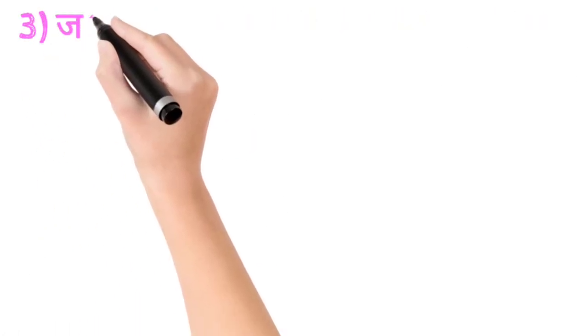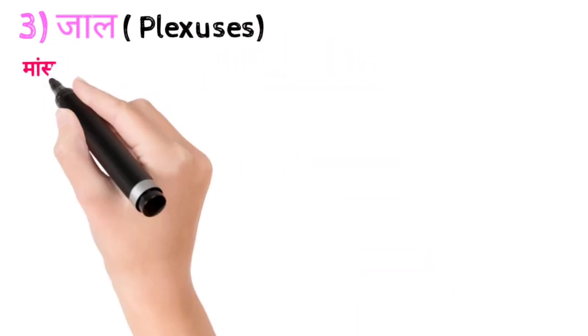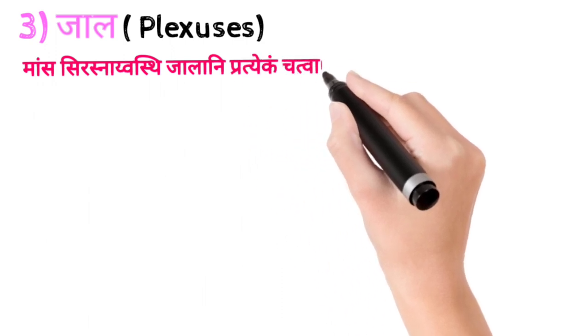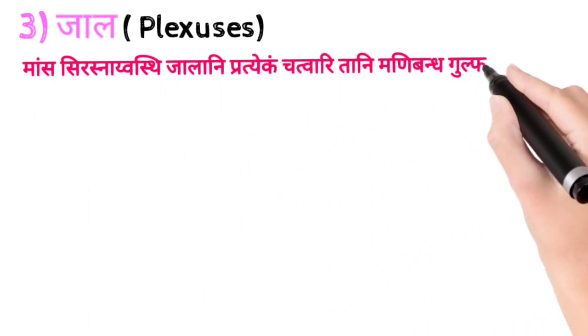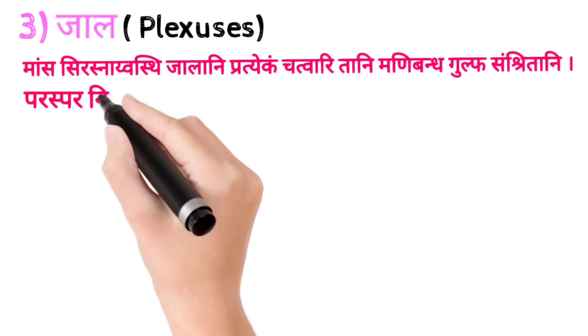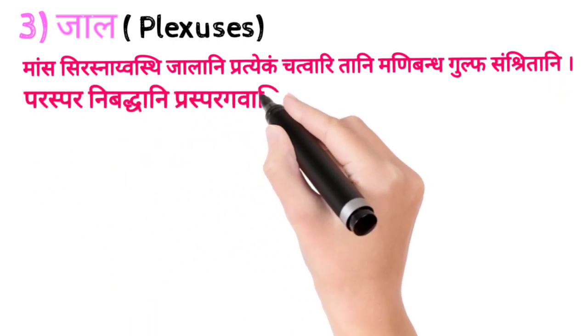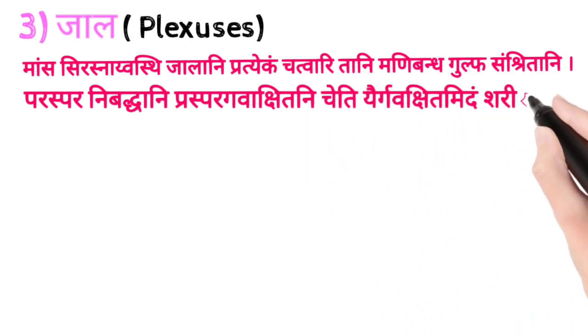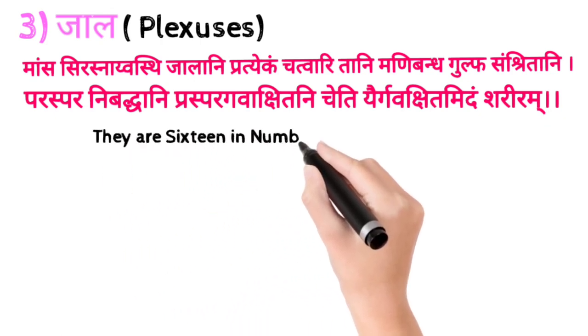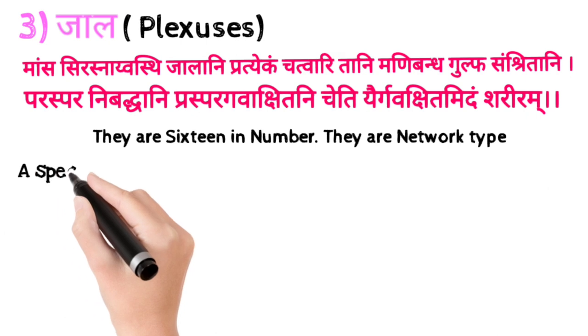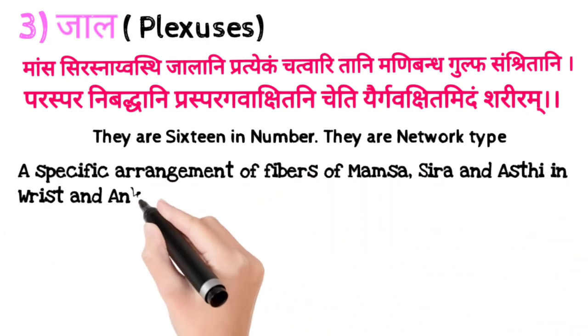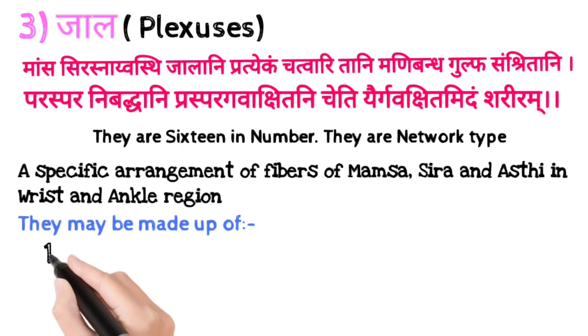The next step is the top part of the neck region. Plexuses hote hain. Mass Sira Snayu Asthi Jalani Pratekam Chathwari Tani Manivand Gulf Sanchritani Paraspar Nibadani Paraspar Gavakshitani Cheti Yer Gavakshitam Idam Shariiram Jal. 16 hote hain number mein. Ye network type structures hote hain. A specific arrangement of fibers of Mass, Sirah and Asthi in wrist and ankle region is called Jal. They may be made up of Mass, Sirah, Snayu aur Asthi.